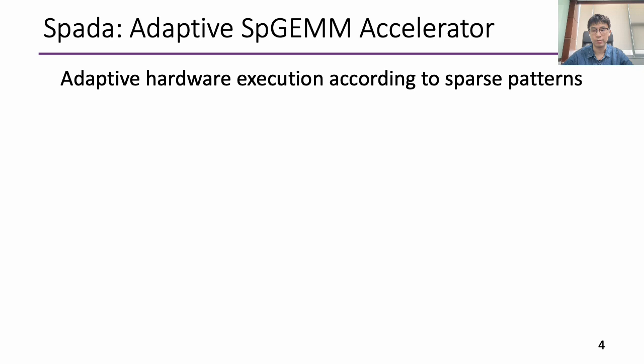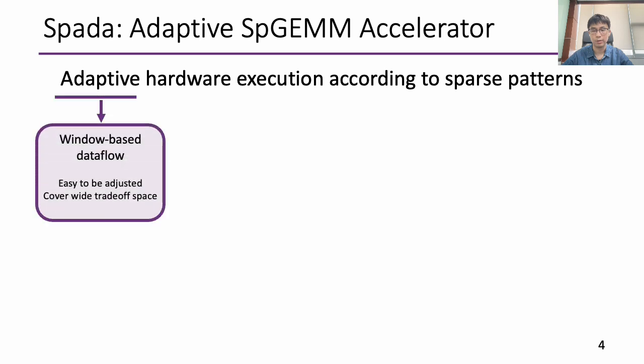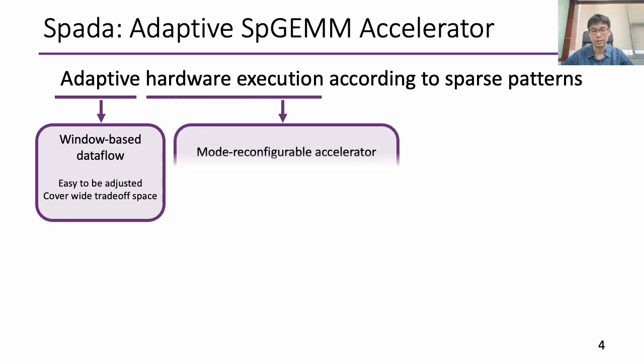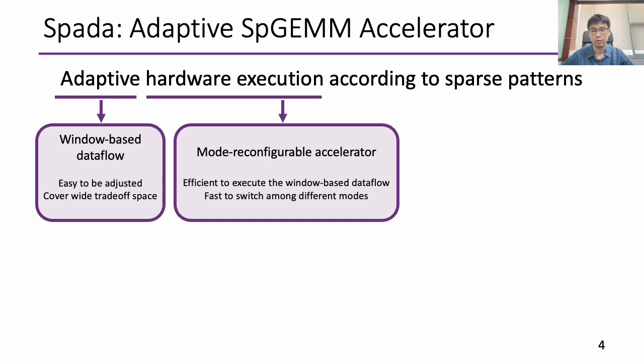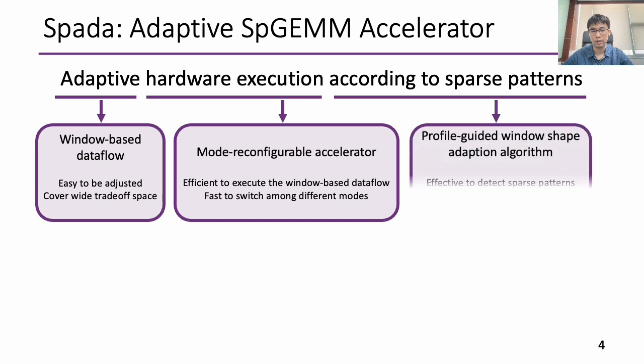To realize such potential, we propose SPADA, which performs adaptive hardware execution according to sparse patterns. First, we propose an adaptive window-based data flow, which is easy to be adjusted and covers a wide tradeoff space. Second, for the hardware, we propose a mode-reconfigurable accelerator, which is efficient to execute the data flow and can swiftly switch among different modes. Last, we propose a profile-guided window-shape adaptation algorithm, which can effectively detect sparse patterns in a lightweight way.